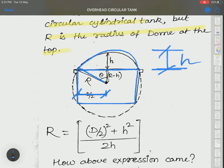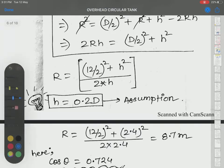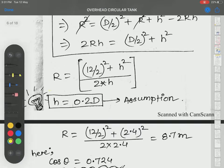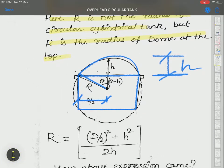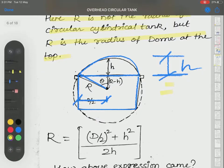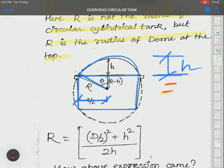H can be assumed as 0.2 times D, where D is the diameter of the circular water tank. This is an assumption but very, very important. So h equals 0.2D, and then h can be found accordingly.